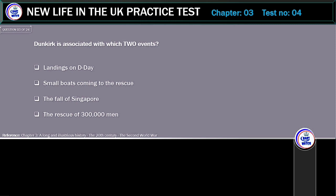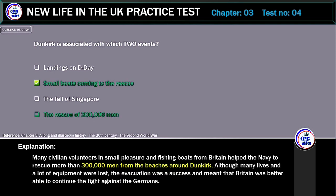Dunkirk is associated with which two events? The correct answer is: small boats coming to the rescue, and the rescue of 300,000 men. Many civilian volunteers in small pleasure and fishing boats from Britain helped the Navy to rescue more than 300,000 men from the beaches around Dunkirk. Although many lives and a lot of equipment were lost, the evacuation was a success and meant that Britain was better able to continue the fight against the Germans.